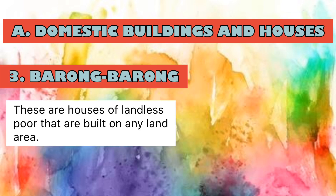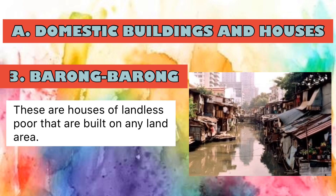Number three is Barong-Barong. These are houses of the landless poor that are built on any land or area. They are usually found near esteros, riverbanks, and bay shores, as well as spaces along high walls, railroad tracks, spaces near abandoned buildings, garbage dumps, or any vacant lot. Some Barong-Barong are built under bridges. People usually build these houses near places of livelihood. There are also people who prefer building on wide vacant lots to raise animals, plant vegetables, or undertake a small business.